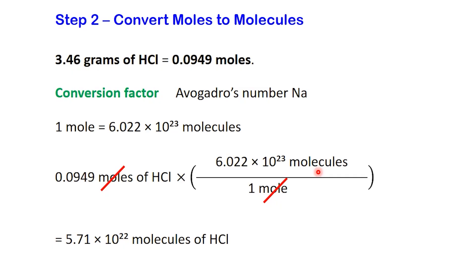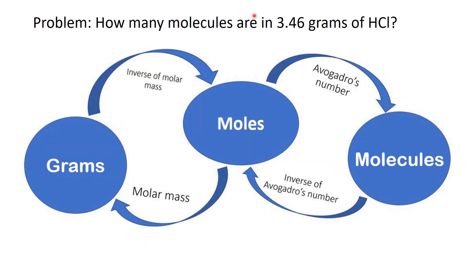which gives 5.71 times 10 to the 22 molecules of HCl, and that's your final answer. And that's it. We started with 3.46 grams of HCl, converted that into moles, then used Avogadro's number to find the total number of molecules.